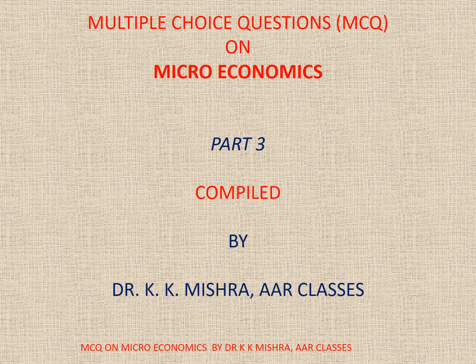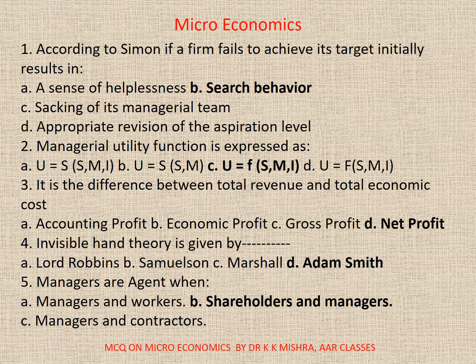Question number 1. According to Simon, if a firm fails to achieve its target initially, it results in: A. A sense of helplessness. B. Search behavior. C. Psyching of its managerial team. D. The appropriate revision of the aspiration level. Correct option is B. Search behavior.